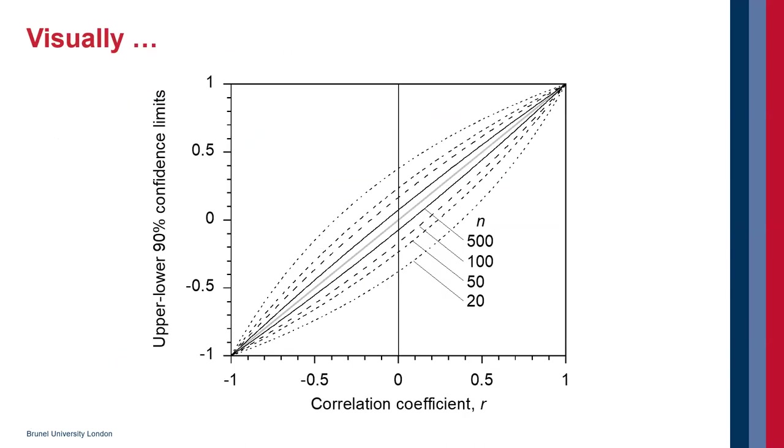So a way around it is to produce a visual representation. So this is a visual representation of how the confidence intervals in correlation coefficient depend on the value of the correlation coefficient and also on the number of samples.